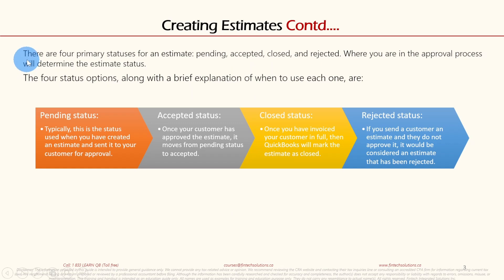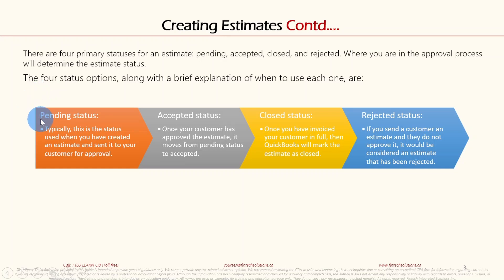There are four primary statuses for an estimate: Pending, Accepted, Closed, and Rejected. Where you are in the process will determine the estimate status. First, Pending status — this is typically the status used when you have created an estimate and sent it to your customer for approval.